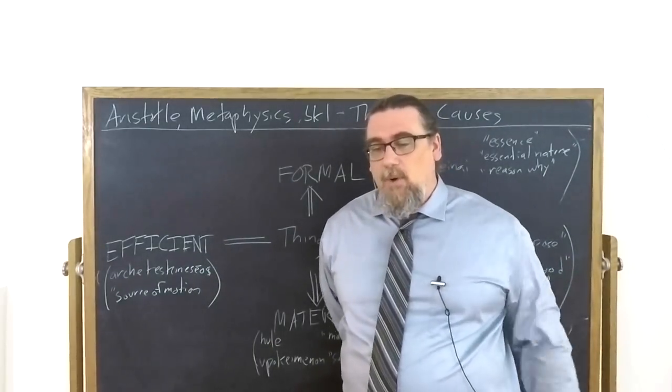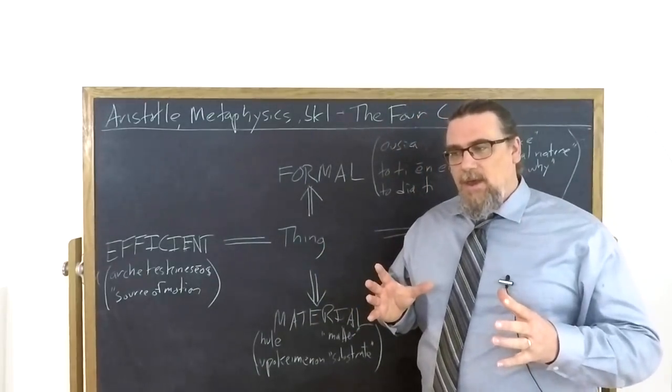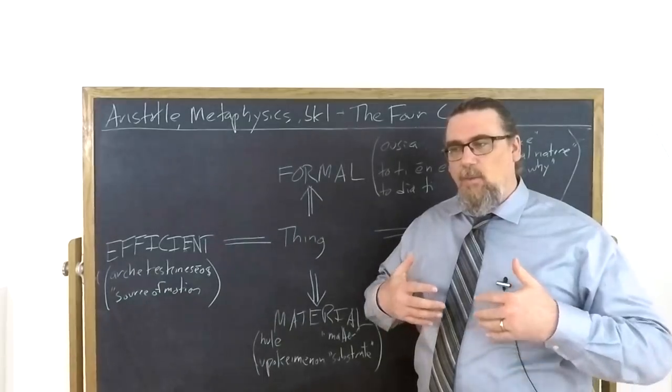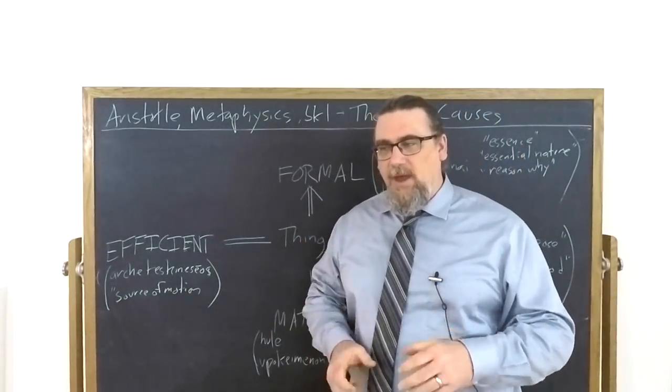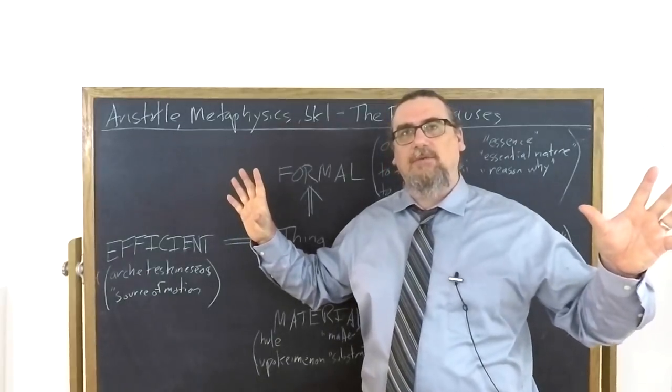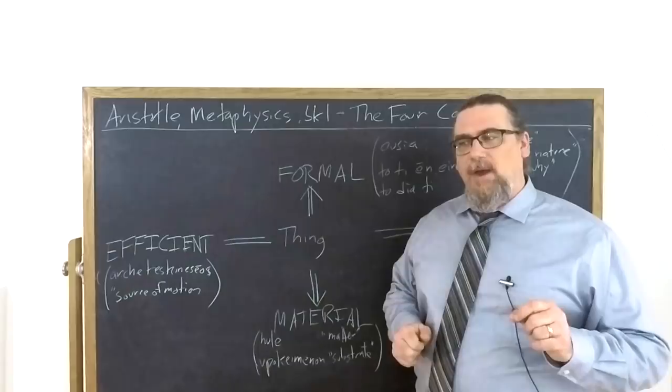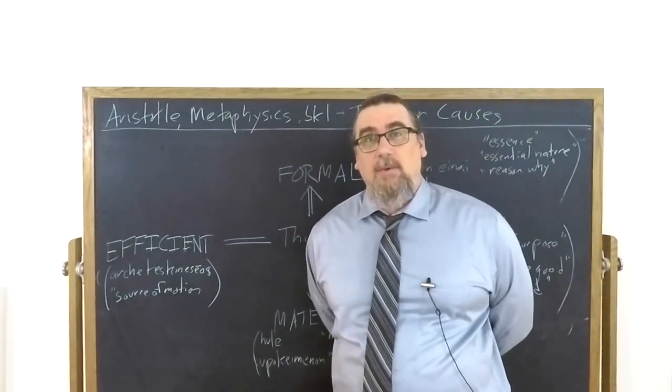The same thing could be a cause in multiple ways for multiple things. So the same thing could be, for example, an efficient cause and also a material cause. But when we're talking about one thing and its relation to another, it will be a cause for its effect in one of these four ways, according to Aristotle. And this is really important because in his view, this is what allows us to understand why things are the way they are for the entire universe.